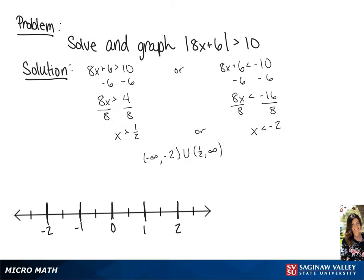Now to graph this, we're going to draw an open circle around 1 half and an arrow going towards positive infinity. And we're going to draw an open circle around negative 2 and an arrow to the left or to negative infinity. Thank you.